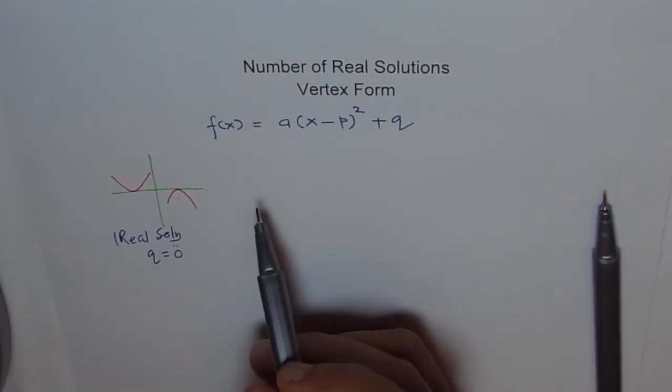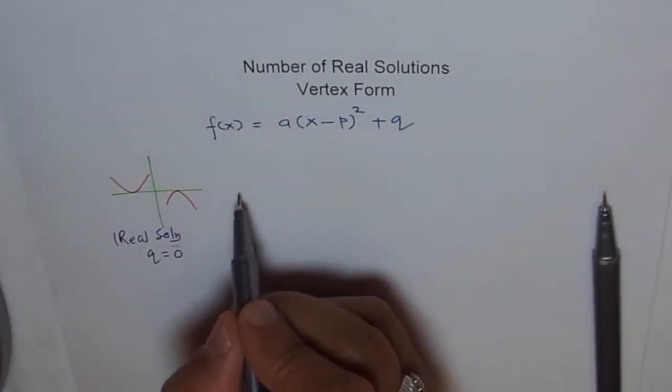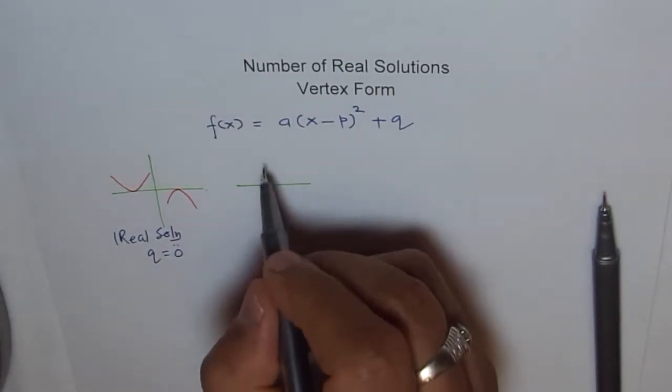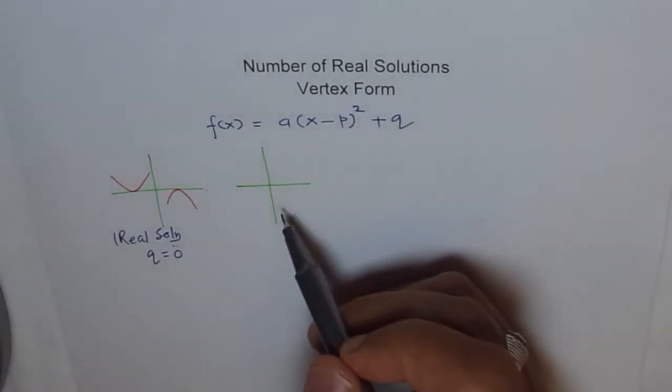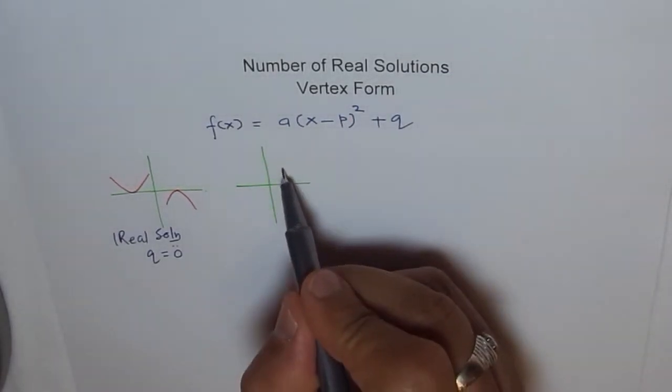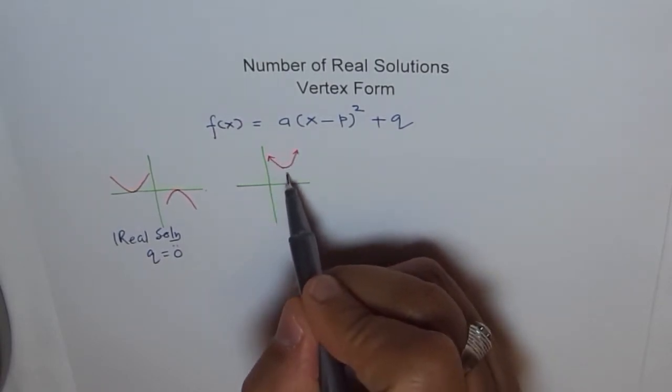Now, let's consider two or no real solutions because those are the other possibilities. Let's look into no solution. When do you get no real solution? When we have vertex here and the parabola opens upwards. No real solution.